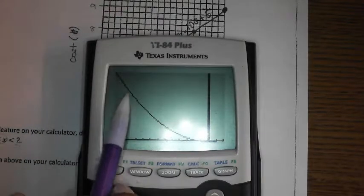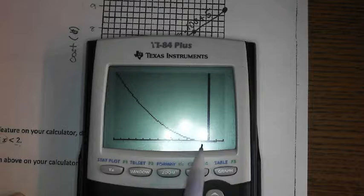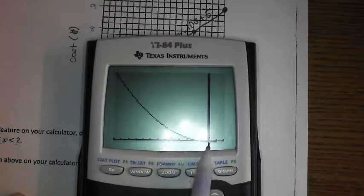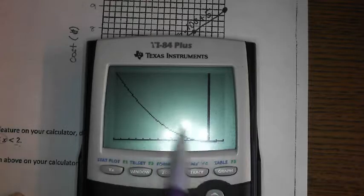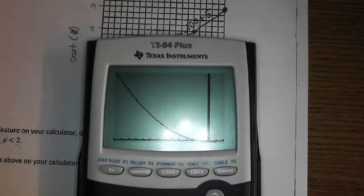And you're going to get a much better feel for what that table we were looking at was reflecting. Remember it was decreasing, decreasing, decreasing. It went down to negative 8 and then it started increasing again. So you can see that now that you've reflected that table in the graph by fixing your window.